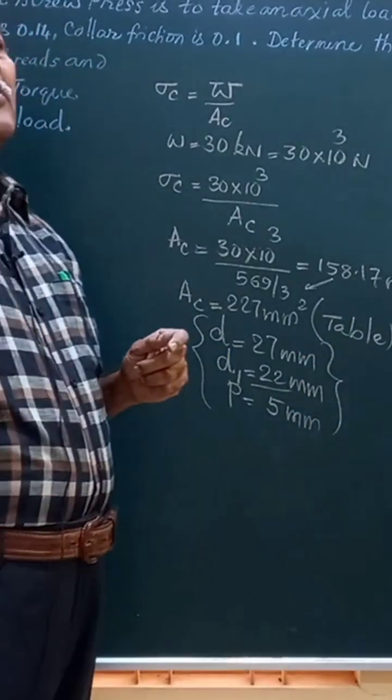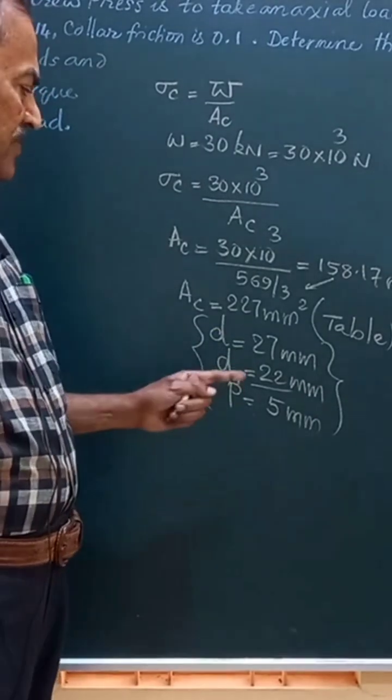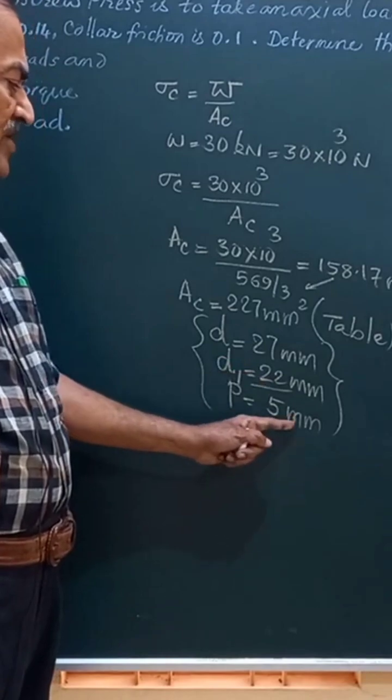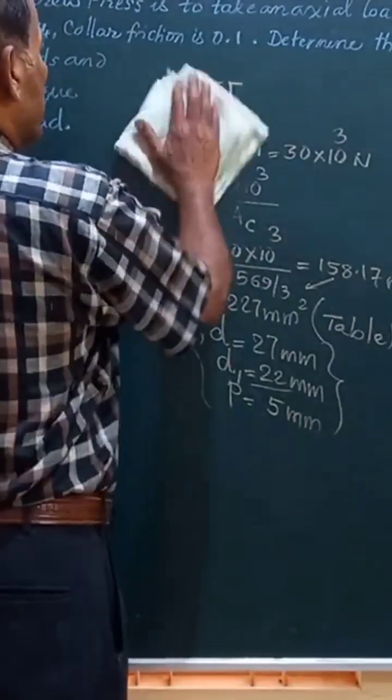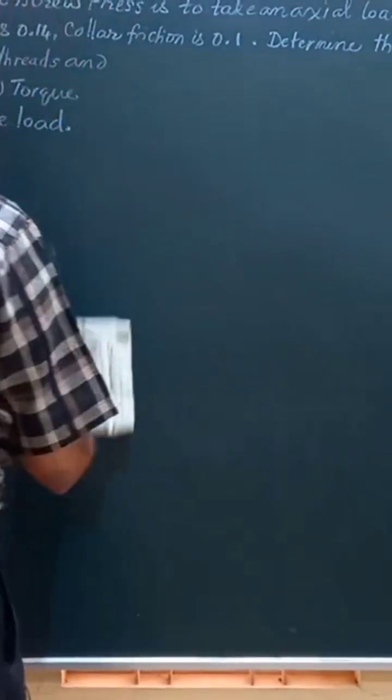That is to say, the screw rod we select should have a nominal diameter 27 mm, core diameter 22 mm, which is equal to 5 millimeter. This is how we specify the square thread. So we have completed the first part of the question.